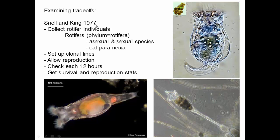Here's an experiment from 1977 done by Snell and King. They collected rotifers — different species of rotifers are asexual or sexual. They worked with the asexual species and got a number of genetically identical clones, so any differences between individuals would be due to nutrition or reproductive history, not genetics. They set up these clones, allowed reproduction, and every 12 hours checked for survival and reproduction of those individuals, allowing them to look at the potential trade-off between survival and reproduction.